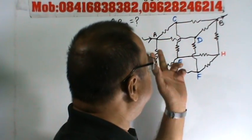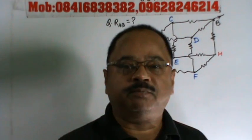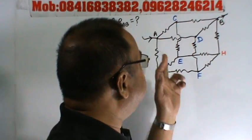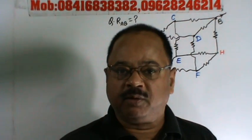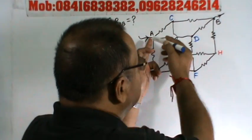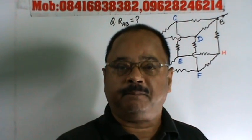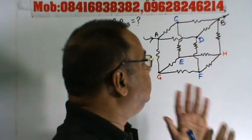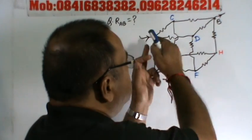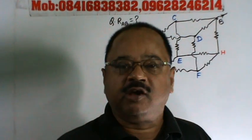So friends, again in this problem you have to calculate the equivalent resistance of the cube — a network of resistances connected in the form of a cube across AB. But this time, AB is the point on the same face along the opposite diagonal of the cube. Previously it was across the opposite diagonal of the cube, but here the two points A and B are located on the same face along the opposite diagonal of that face.